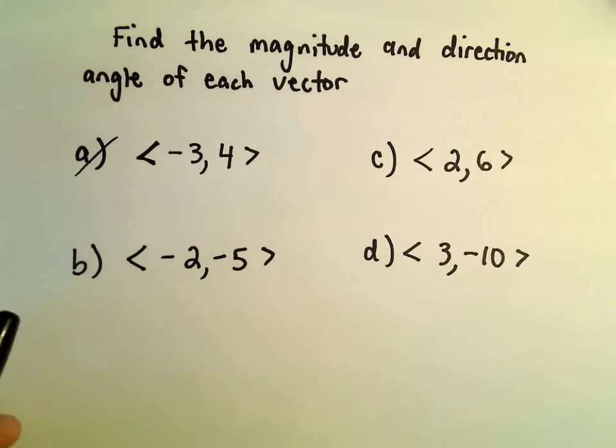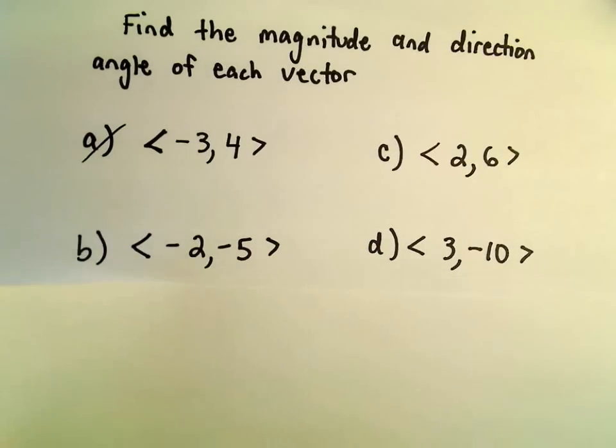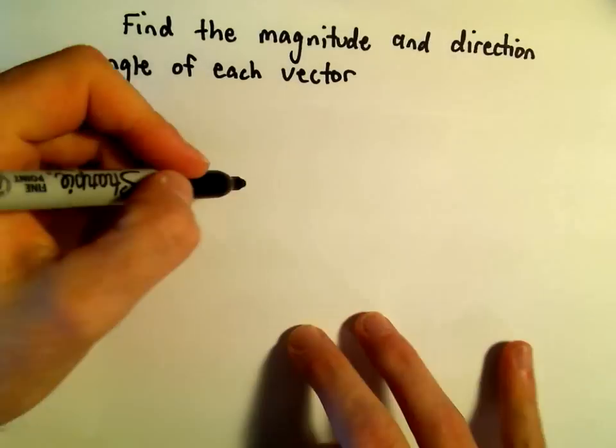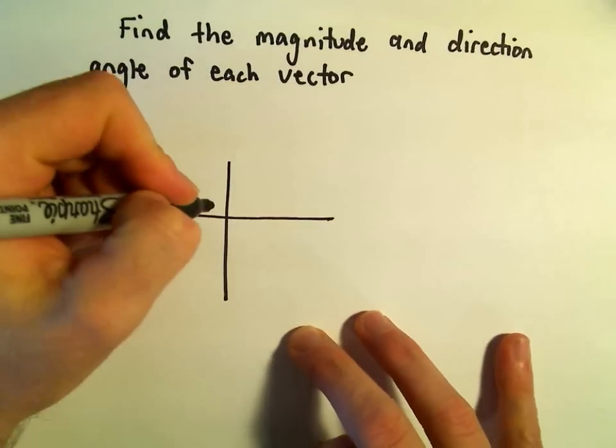I've got that down here in the bottom left. First, I like to graph my vectors. It's got components negative 2, negative 5. You don't have to do this, but I like to.